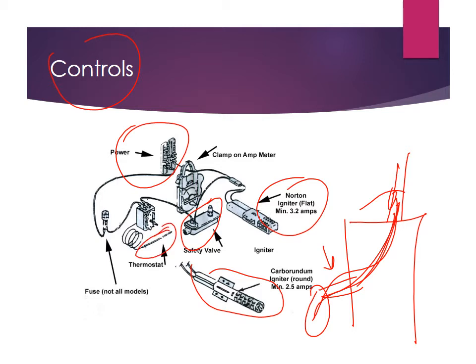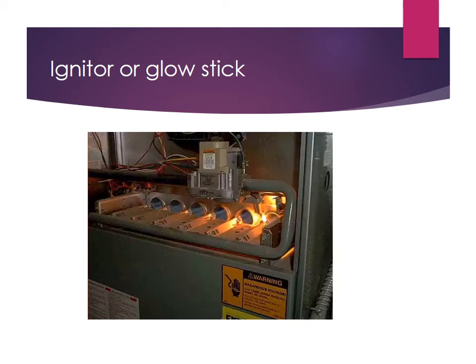There's also a thermostat that proves there's a flame inside the chamber. We no longer use a CAD cell with a flame sensor measuring light inside the flame. The flame we get from gas is also different than the flame from oil.